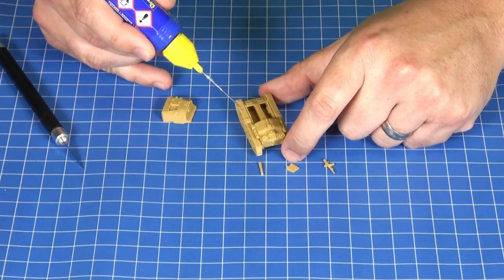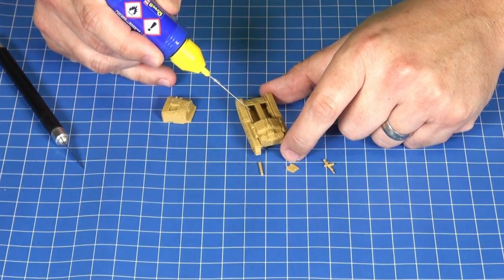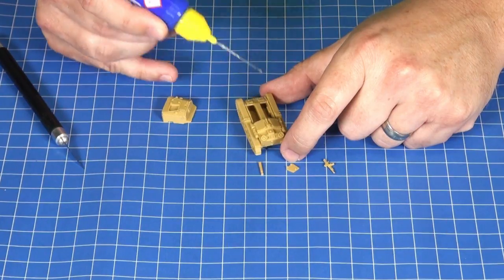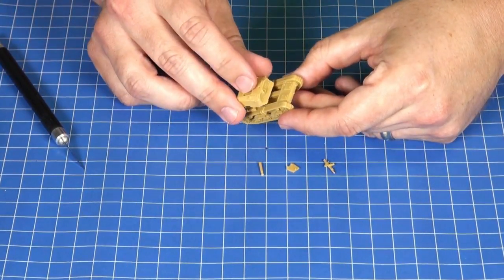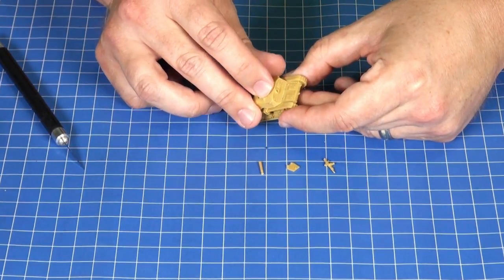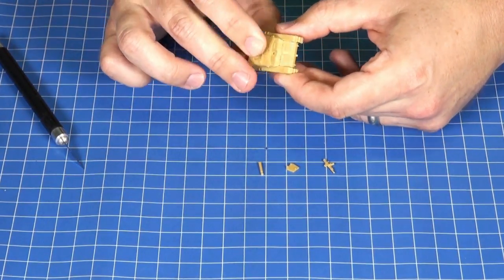You can see I can run a bead of glue down both sides, and then I'm just sort of finessing a bit of glue into the front there. That'll just attach to the underside of the casemate. Then you can see I just slide it in, and then push it down.